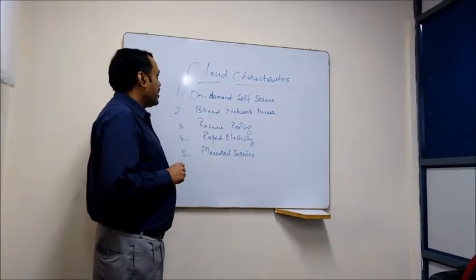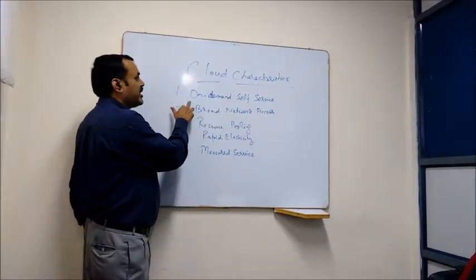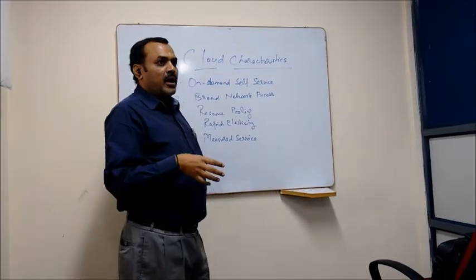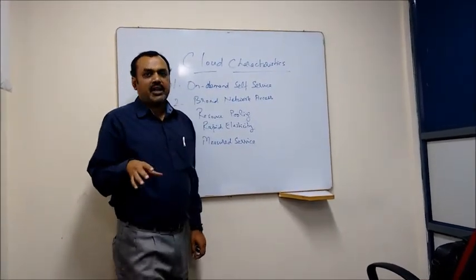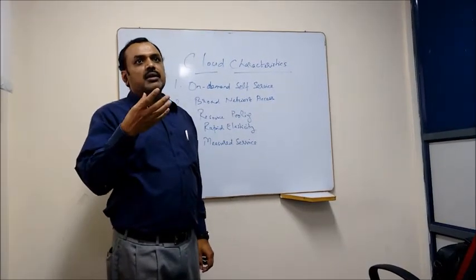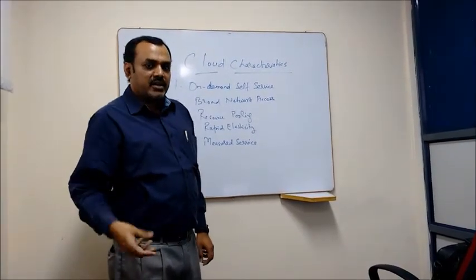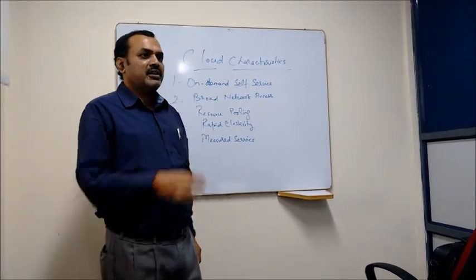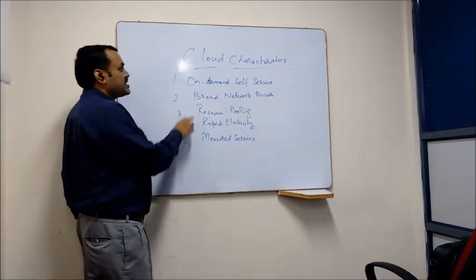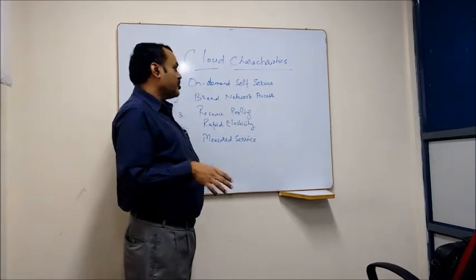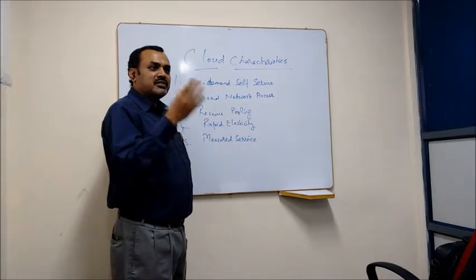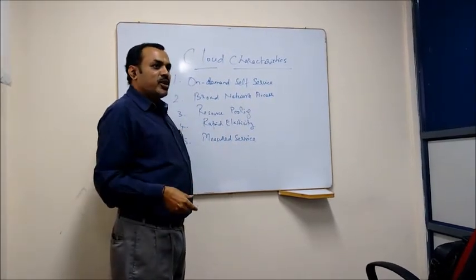The characteristics of a cloud - we have, on one hand, this on-demand service. If you use Amazon, you will know that you go there and give commands to start EC2 instances, or you tell how much storage space you want and other services that are there. You procure on-demand; you don't need to tell Amazon to do it for you. You can do it on-demand on your own.